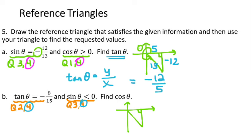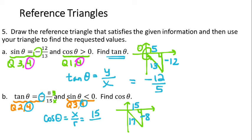The given information is that tangent theta equals negative 8 over 15. Tangent theta equals Y over X, so 8 is my Y and 15 is my X. One of those needs to be negative since tangent is negative, and in quadrant 4 it's the Y value that's negative. To find the hypotenuse R, we recognize this is an 8-15-17 Pythagorean triple, so R equals 17. We're looking for cosine of theta, which equals X over R, giving us 15 over 17.